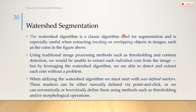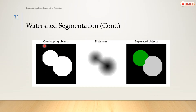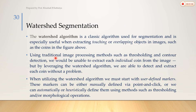The watershed algorithm is a classic algorithm used for segmentation. It is especially useful when extracting touching or overlapping objects in an image, such as coins in a figure. For example, we have one overlapping coin and a second coin — this is called an overlapping object.